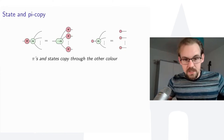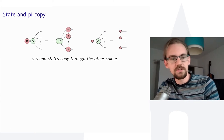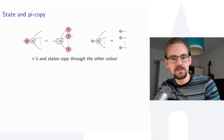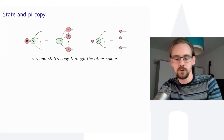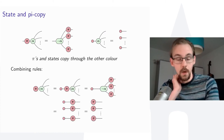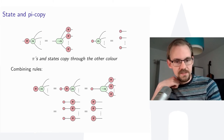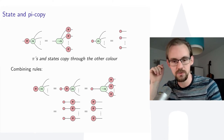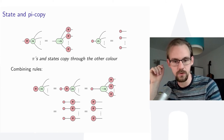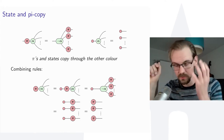Another rewrite rule is the copy rule. A π-phase spider of the opposite color can be pushed through a spider: it copies to all other outputs and flips the phase. Similarly, a state of the opposite color can be pushed through and 'explodes' out the other end. These rules can be combined — for instance, inserting a π, pushing it through, then exploding and fusing — to derive a copy rule for computational basis states |0⟩ and |1⟩.